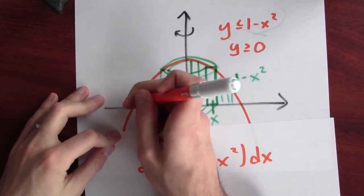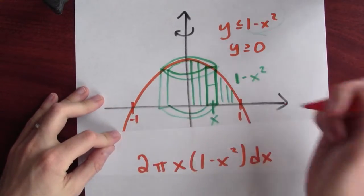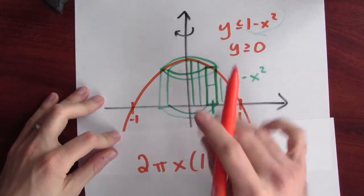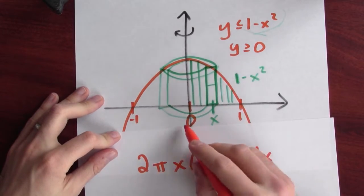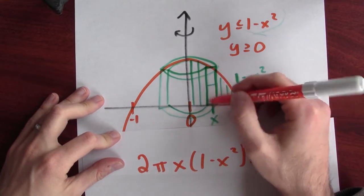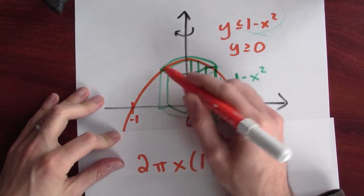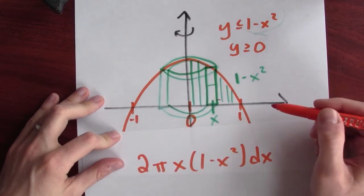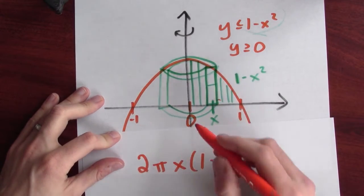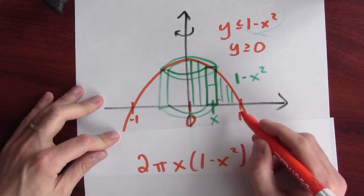Now I have to worry about the endpoints of integration. You might think that I'd be integrating from x equals minus 1 to 1. But actually, I only have to integrate from x equals 0 to 1, because rotating a thin rectangle over here also accounts for stuff happening over here. So it's enough just to integrate from x goes from 0 to 1.